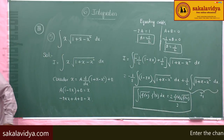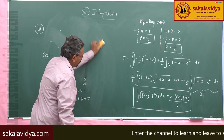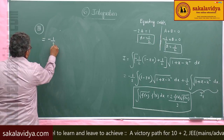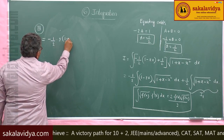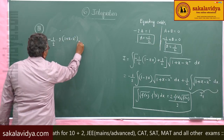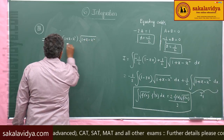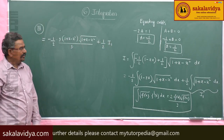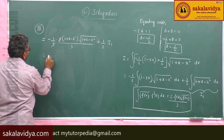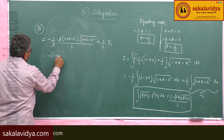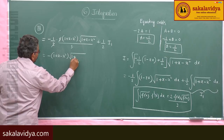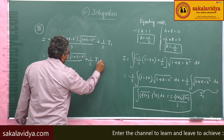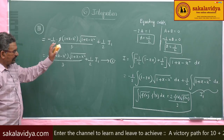This is the formula we already discussed in previous exercises: the integral of f'(x) times root of f(x) dx equals 2f(x) times root of f(x) divided by 3. So the first part becomes minus 1/2 times 2 times (1 plus x minus x squared) times root of (1 plus x minus x squared) divided by 3, plus 1/2 times I₁ — call this equation 1. Now I₁ must be found separately.